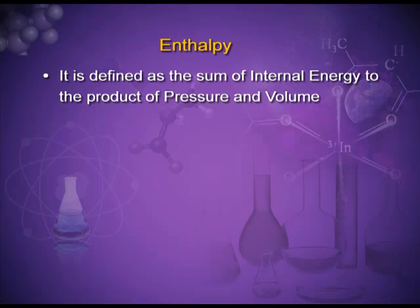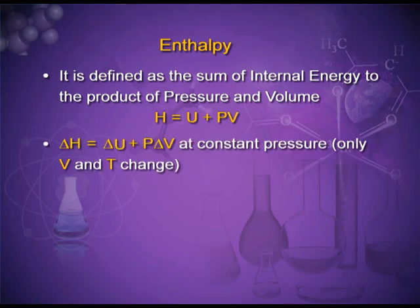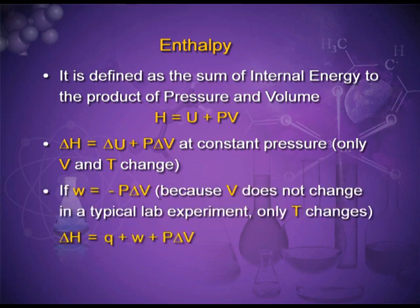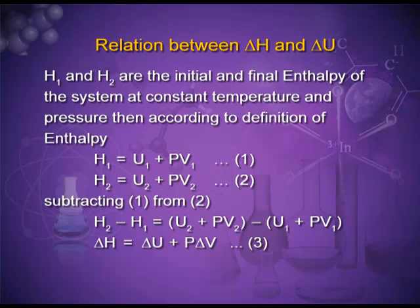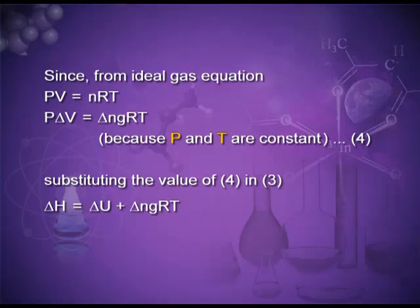The relationship between internal energy and enthalpy is defined as the sum of internal energy and the product of pressure and volume: H equals U plus PV. We can also say delta H equals delta U plus P delta V, where delta V is the change in volume, delta U is the change in internal energy, and delta H is the change in enthalpy. From the ideal gas equation PV = nRT, in the equation delta H = delta U + P delta V, we can substitute delta n_g times R times T, where delta n_g is the difference in the number of moles of gaseous products and gaseous reactants.